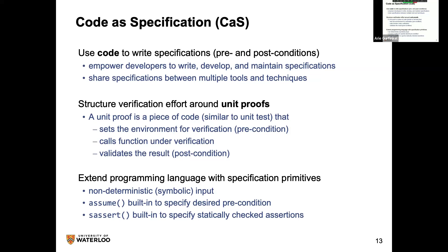One of the first things we observed in the case study is the use of code as a specification language. If you've used CBMC or similar model checkers, you know there's no extra specification language — you just use program code to write specifications. The claim is: I already have code, people know how to write it, structure it, abstract it, and reuse it. Why do I need something else? My specifications can all be executable code.